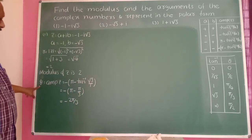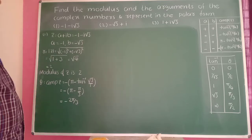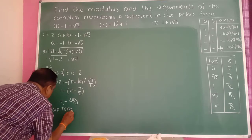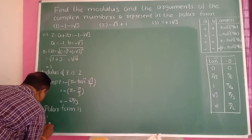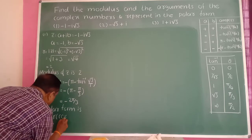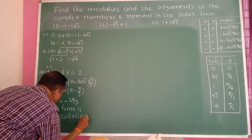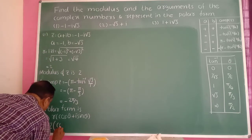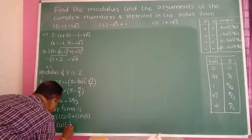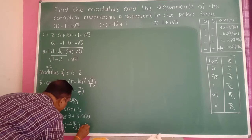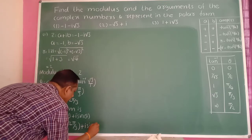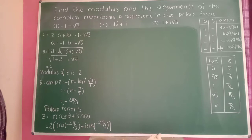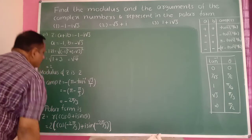Therefore the amplitude of the complex number is minus 2π/3. Now the polar form: z is equal to r·(cos θ + i·sin θ). Substituting, z equals 2·(cos(−2π/3) + i·sin(−2π/3)). This is the polar form of the complex number.